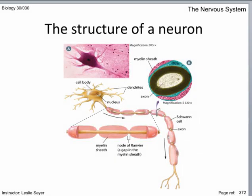Looking at the illustration of the neuron in the center of the screen, the dendrites are the structures that transmit nerve impulses toward the cell body. Axon terminals at the other end of the neuron interface with other neurons' dendrites or effector cells.